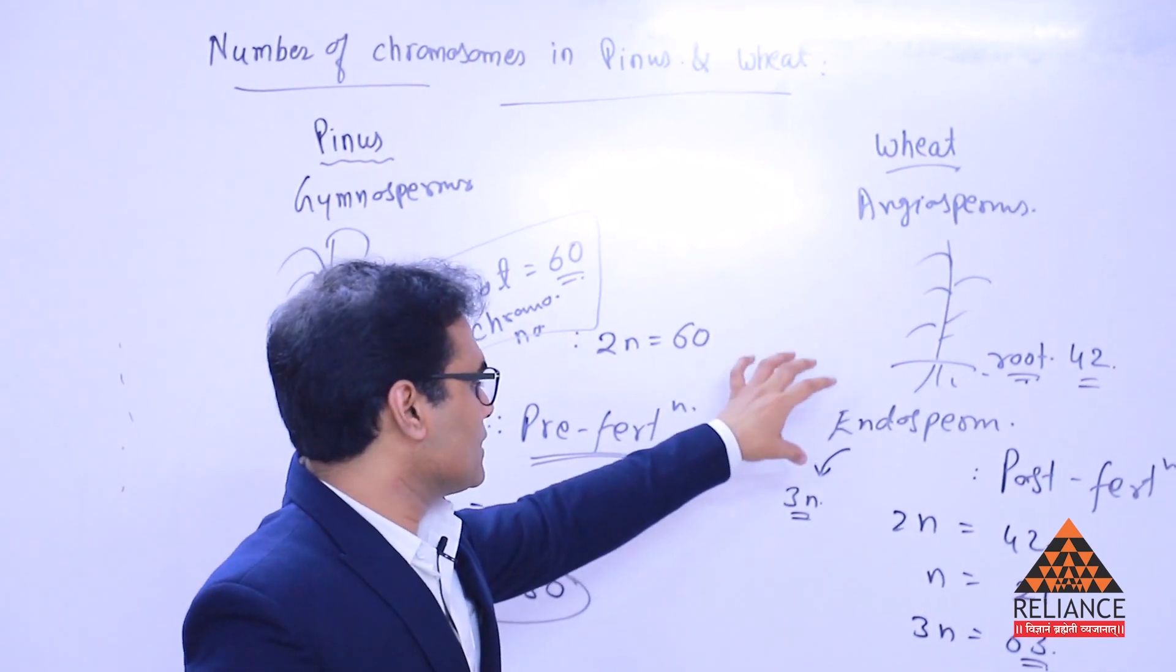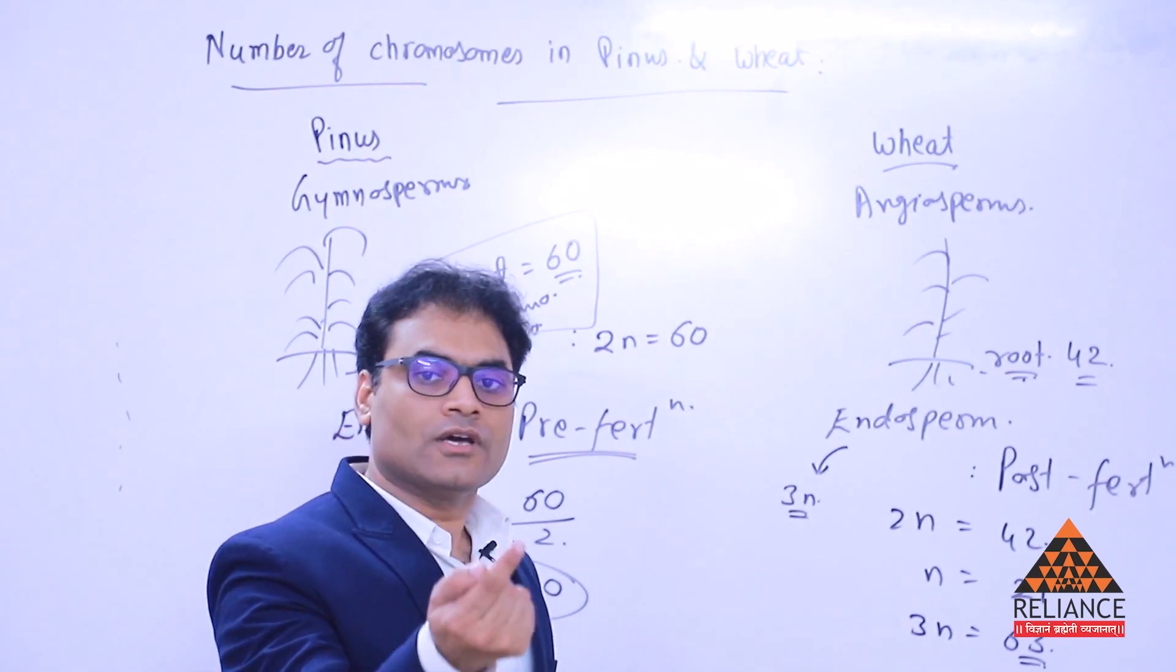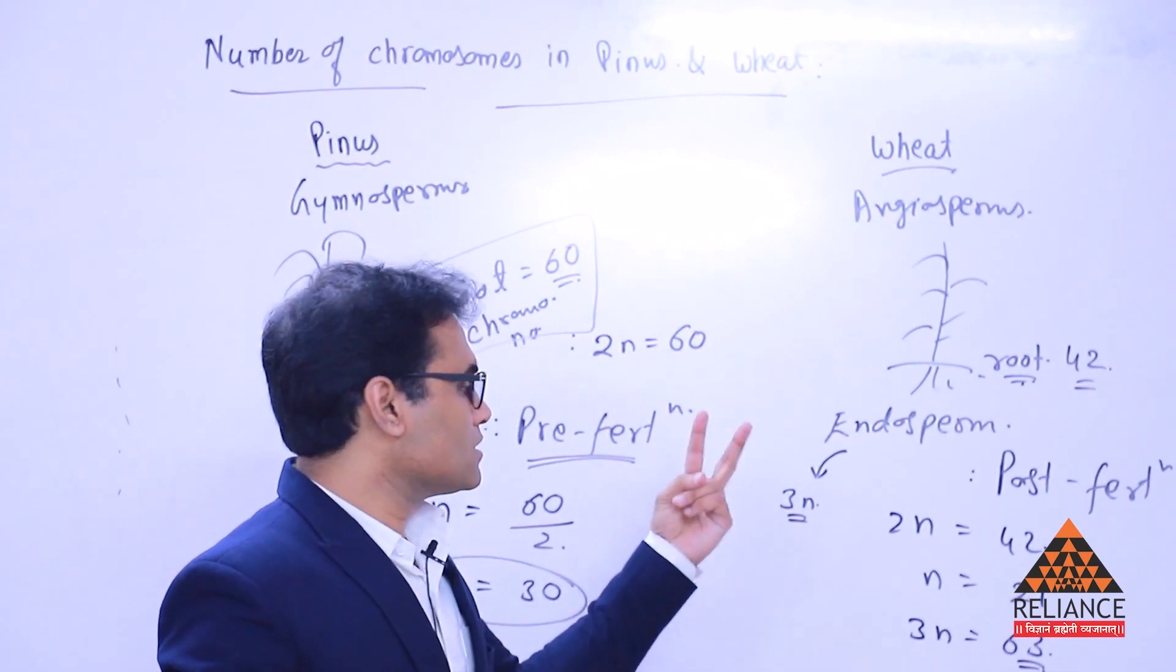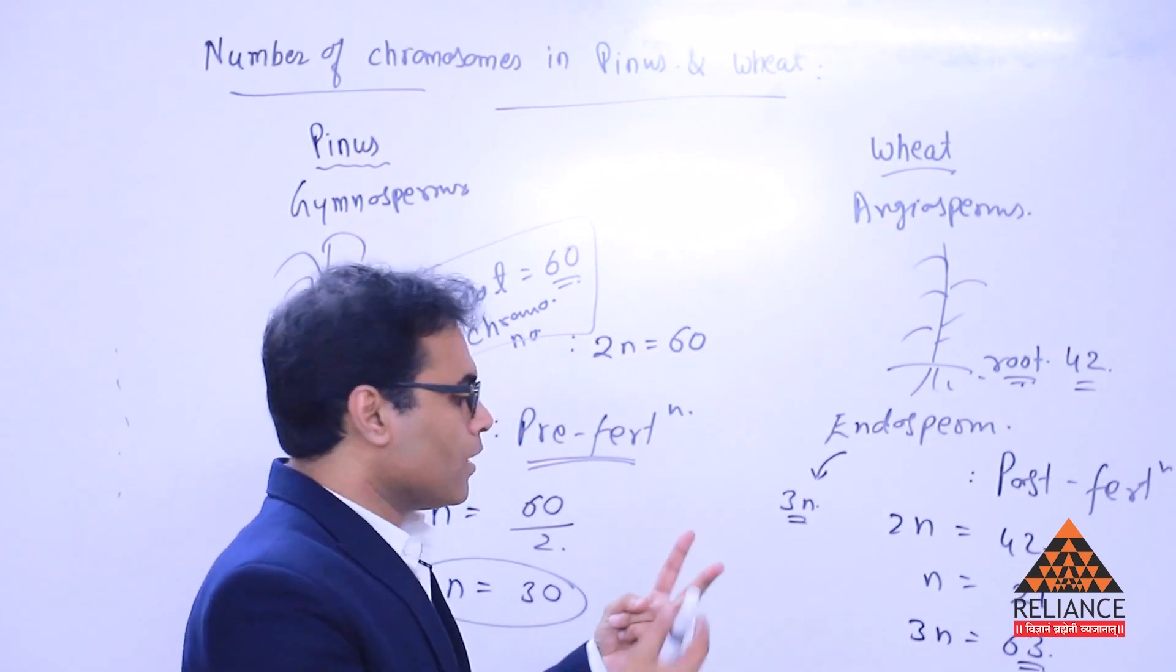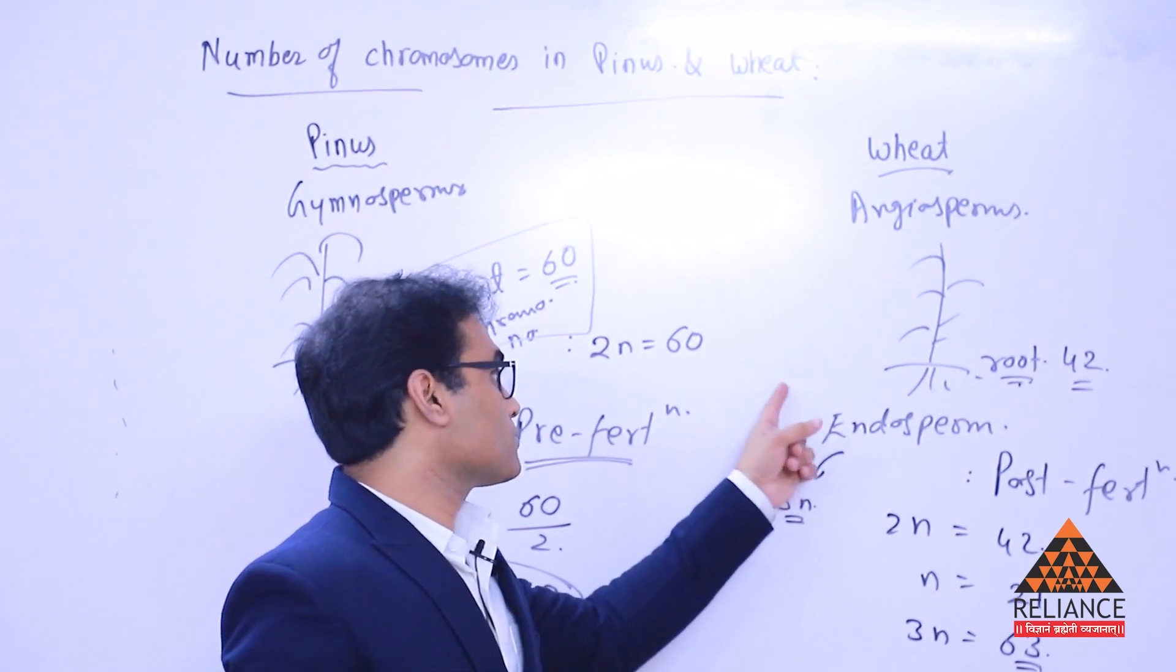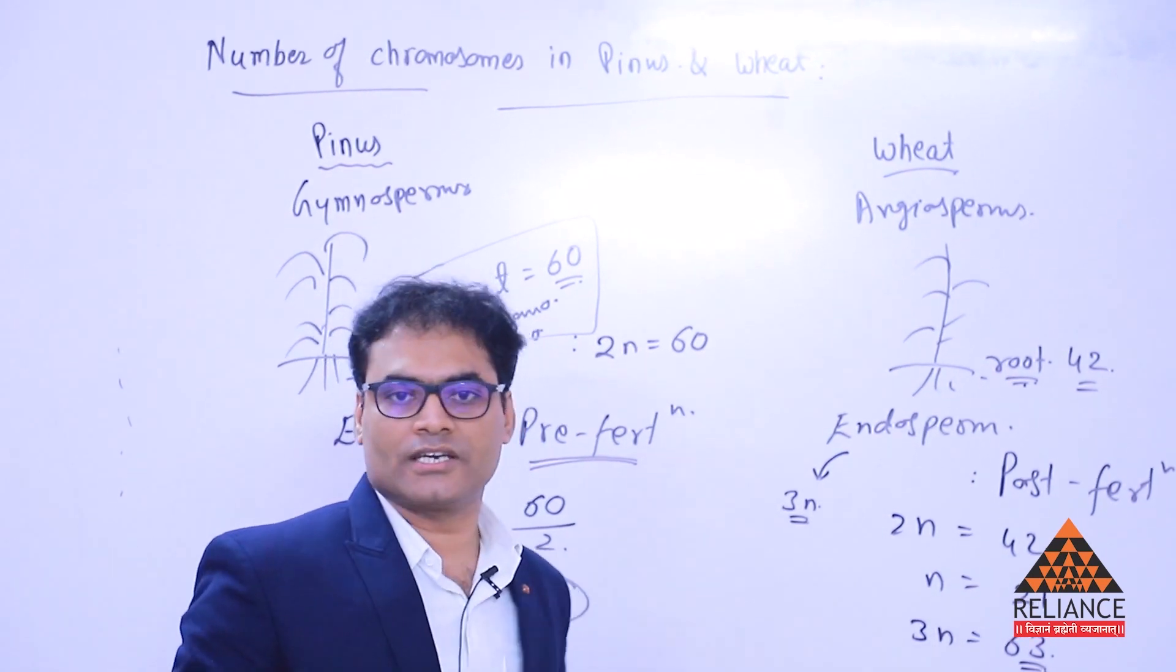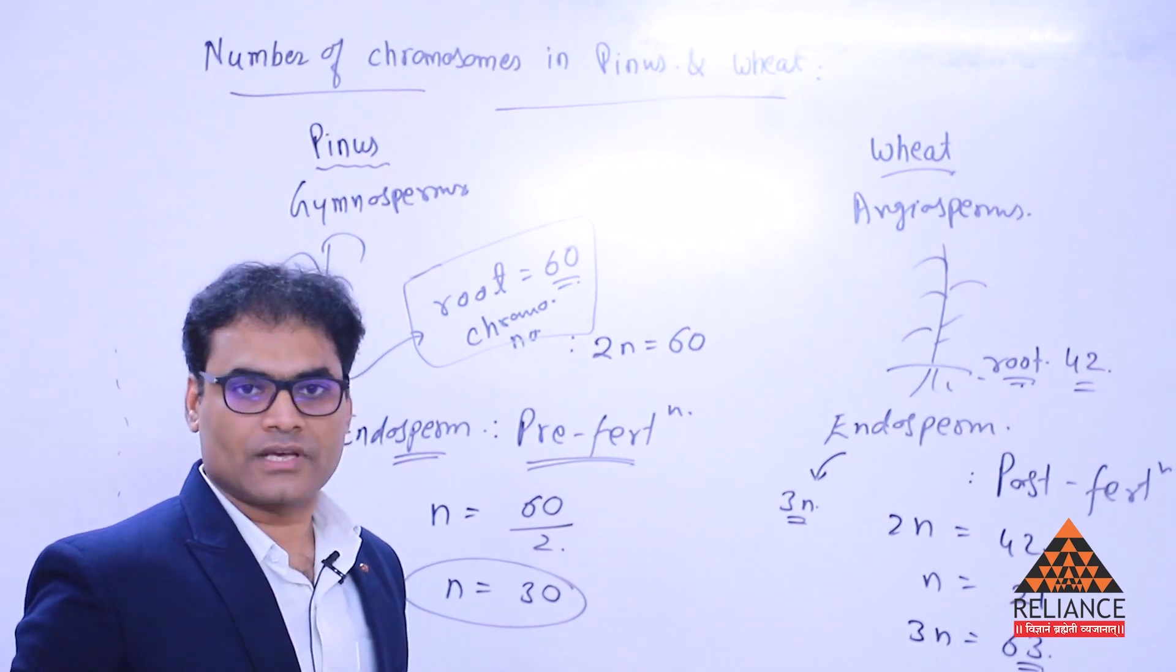Because during fertilization event in angiosperms, the secondary polar nuclei is fusing with one of the male gametes. So, 2N, secondary polar nuclei, that has the 2N condition already, the diploid. Plus one male gamete also comes. So, 2N plus N becomes 3N. So, what we get in case of the endosperm cell of a wheat plant is the 3N condition. And 3N becomes 63. I think you can understand pretty much clearly. Thank you.